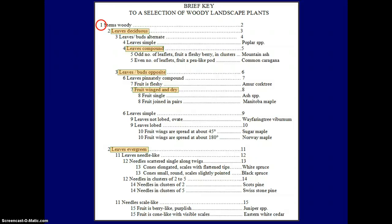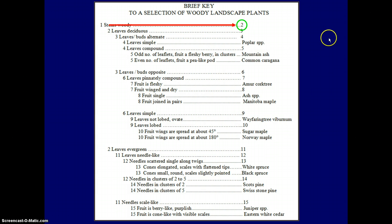Just to refresh again: you start out with a number on the left-hand side, usually one of two choices. On this particular key it shows stems woody, and then this takes you to the right-hand side where there's one unique number that you can choose, or if you have already identified it, you can put the species name in there. If it goes to a number such as number two, then you have to go back to the left-hand side to look at the two choices — in this case, leaves deciduous or leaves evergreen. So this is the key that you will use to key out the following plants.